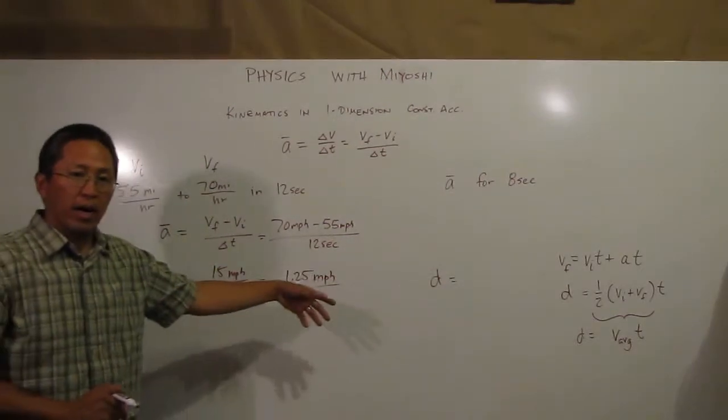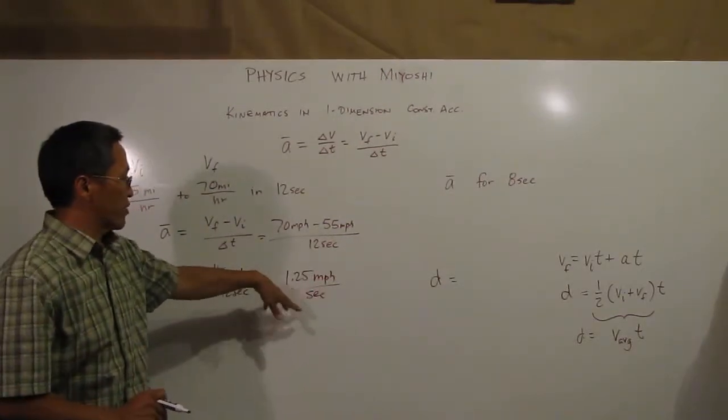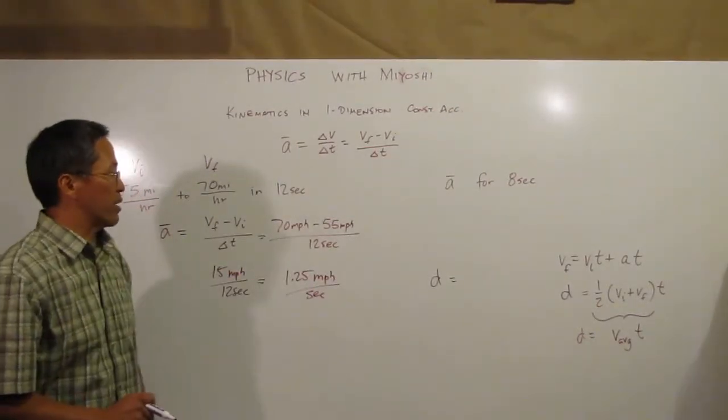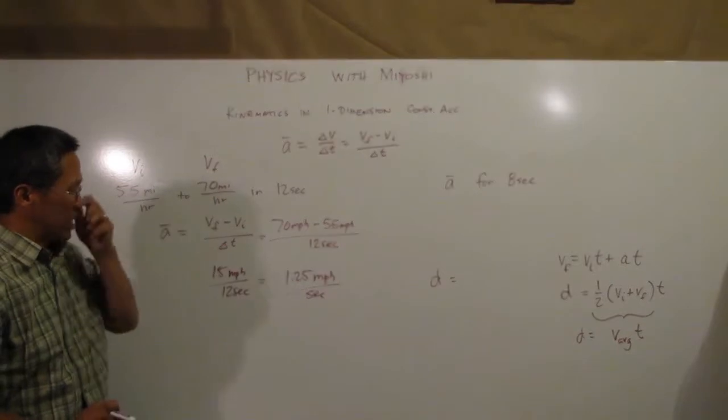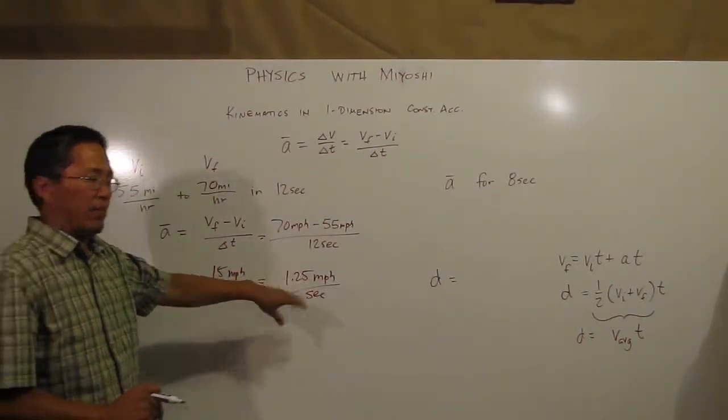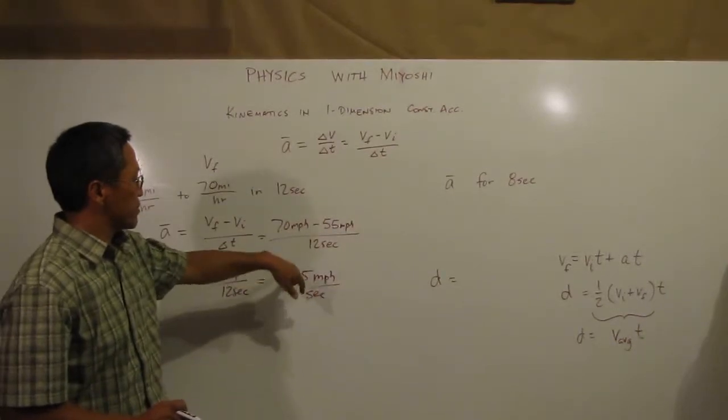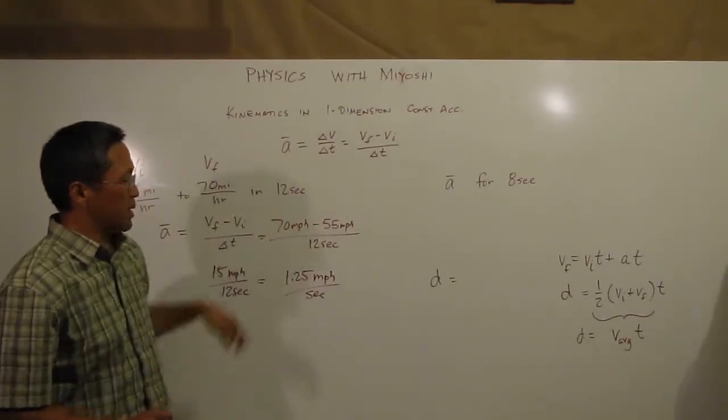And again I could use some unit conversions and convert this to miles per second per second if I wanted to, or I can just leave it like this because what I want to do now is play around with this just a little bit. What if I decided instead of going to a specific speed, I was going to accelerate at this rate for 8 seconds instead?